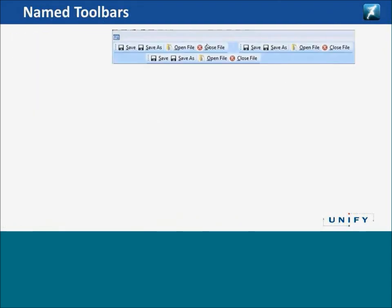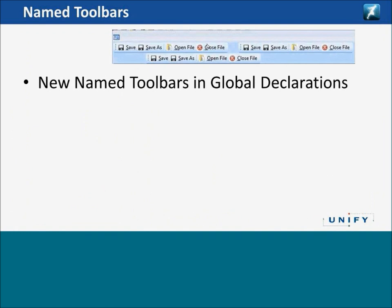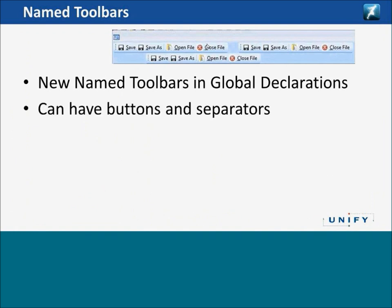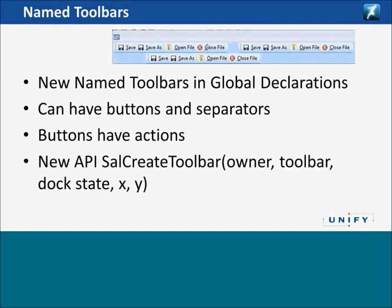Named toolbars are defined in global declarations. Named toolbars can have buttons and separators on them, and buttons have actions that you can define and program. There's a new API called SaalCreateToolbar which allows you to create toolbars at runtime. You pass the name, the dock state, and if you like, the exact X and Y position of where you would like the toolbar to be positioned.